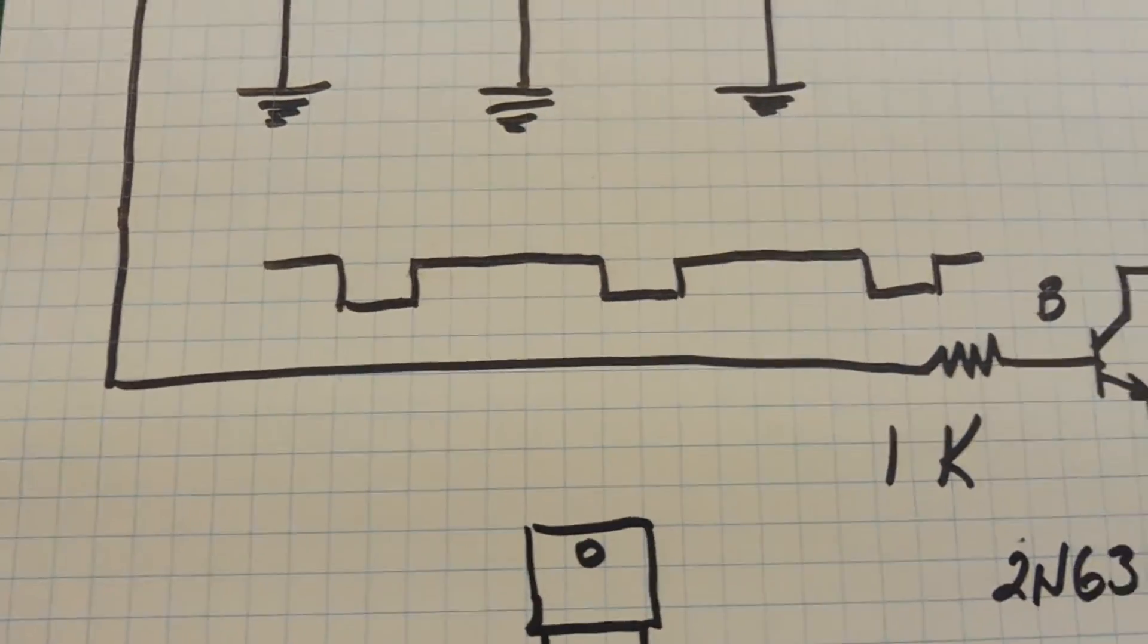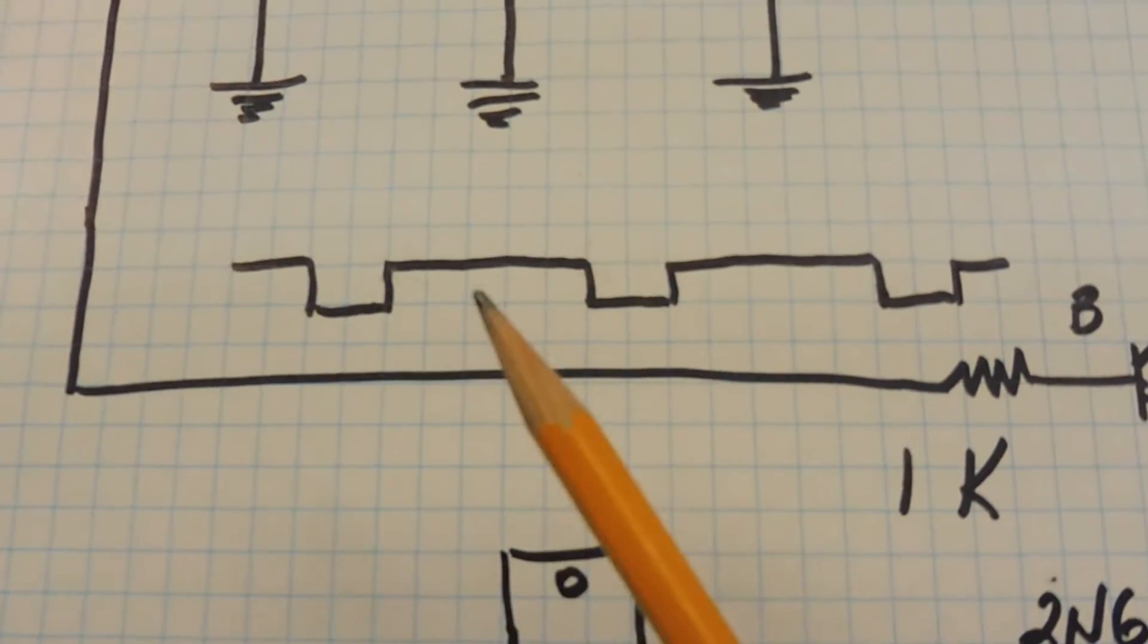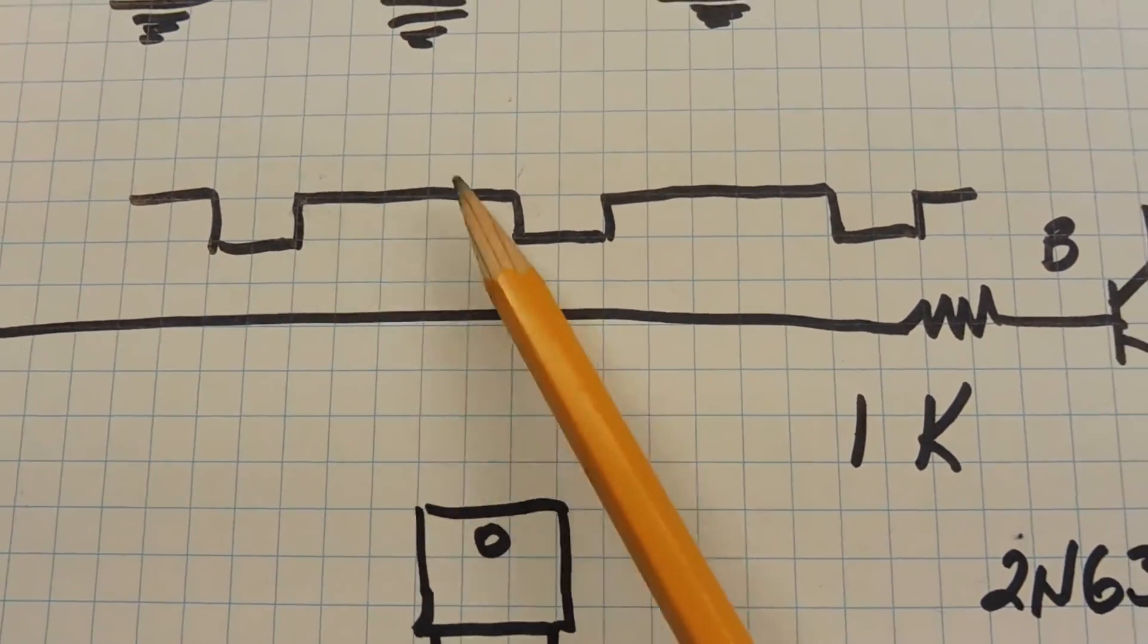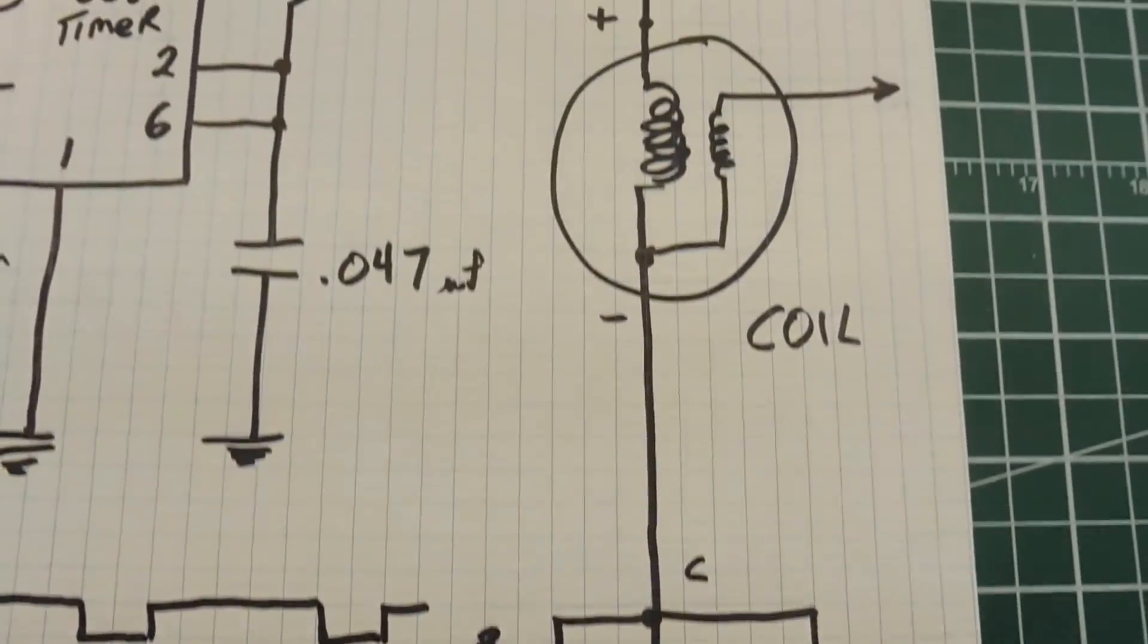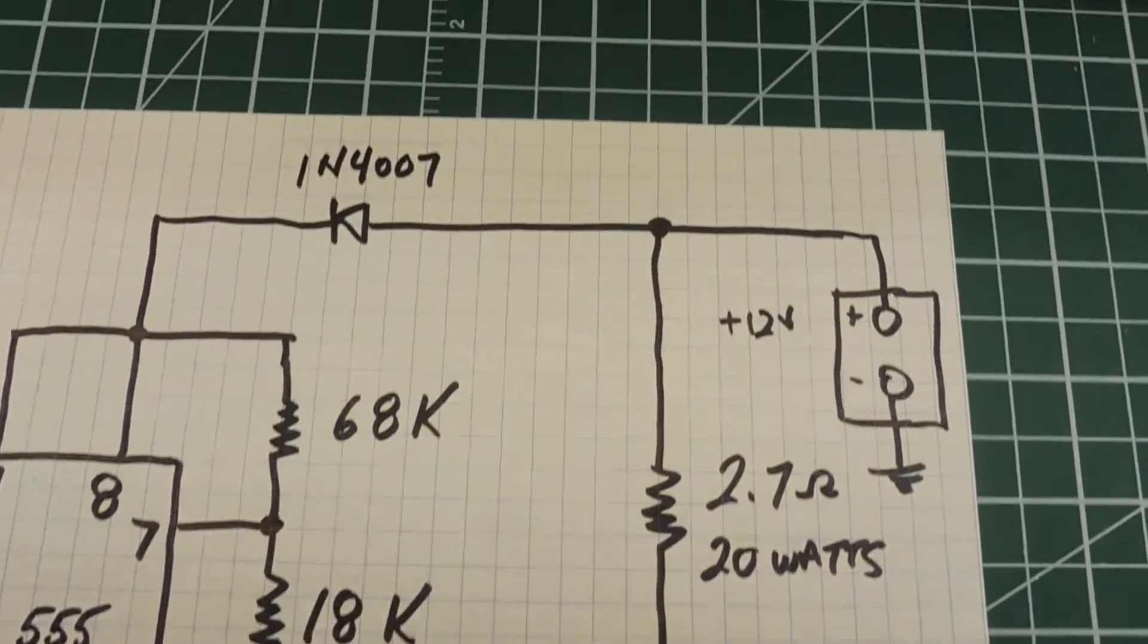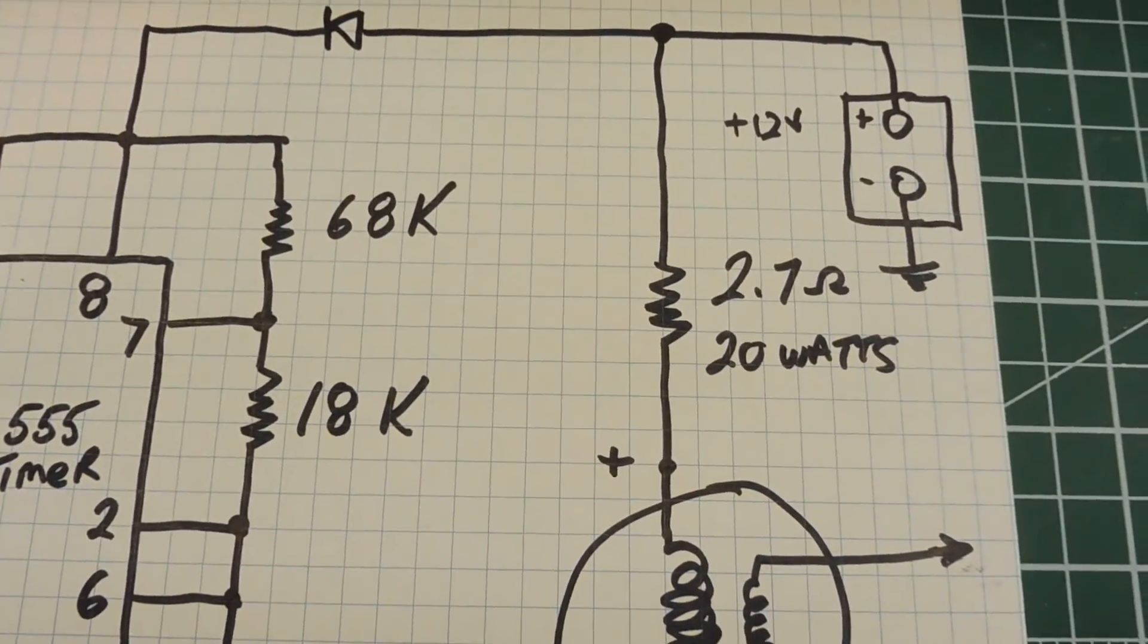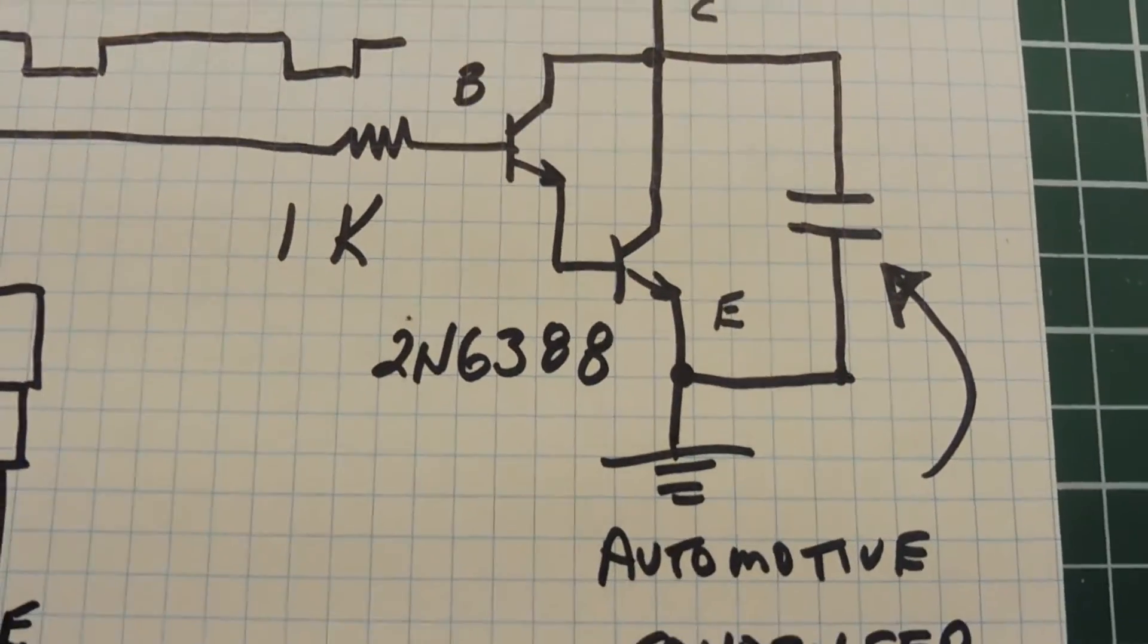Now this waveform is fed into the transistor. When the output of the 555 timer, pin 3 is high between here and here, the transistor will be on and will energize the primary side of the coil through the positive of the battery terminal, through the 2.7 ohm resistor, through the coil, transistor and ground.